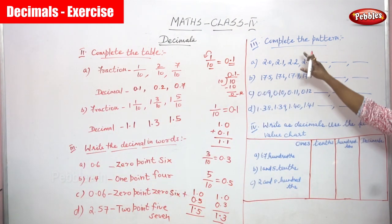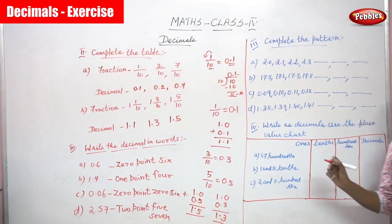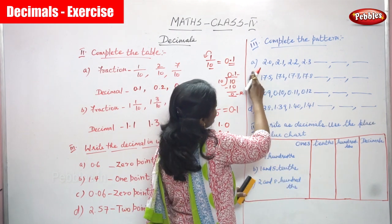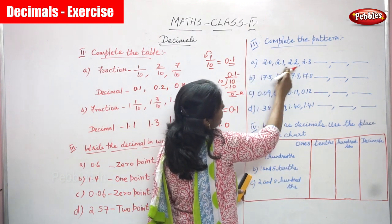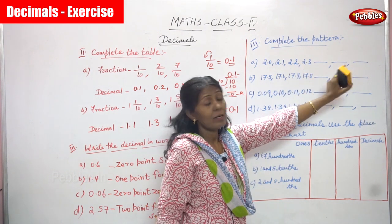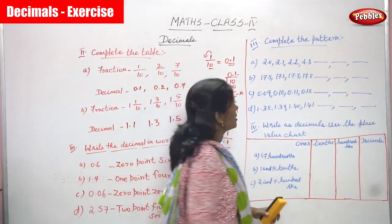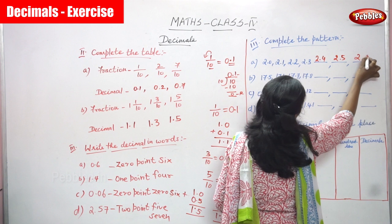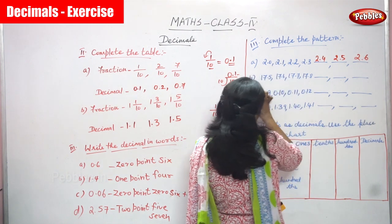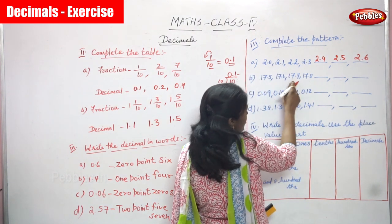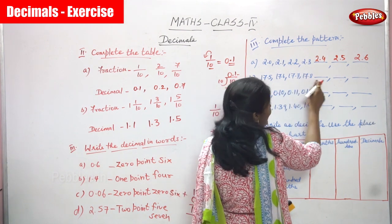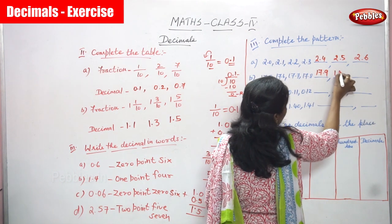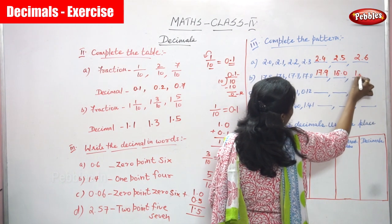Next we are going to complete the pattern. Roman number 3: complete the pattern. Question A: 2.0, 2.1, 2.2, 2.3 — you have to fill in the remaining blanks. After 2.3 you write 2.4, next is 2.5, next is 2.6. Question B: 17.5, 17.6, 17.7, 17.8 — the remaining three blanks are 17.9, then 18.0, then 18.1.